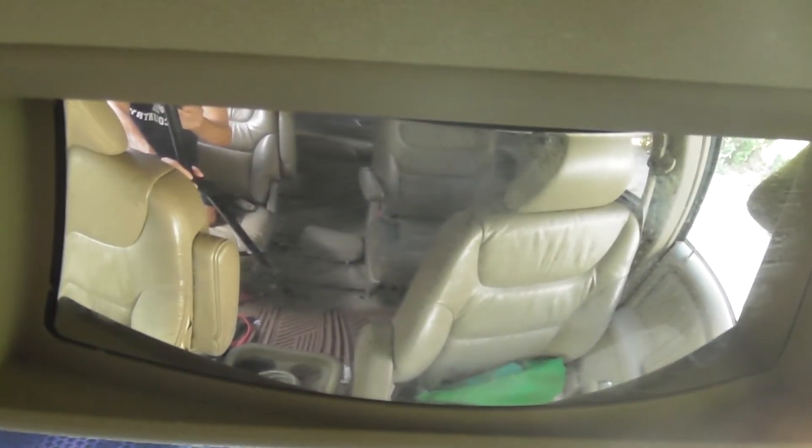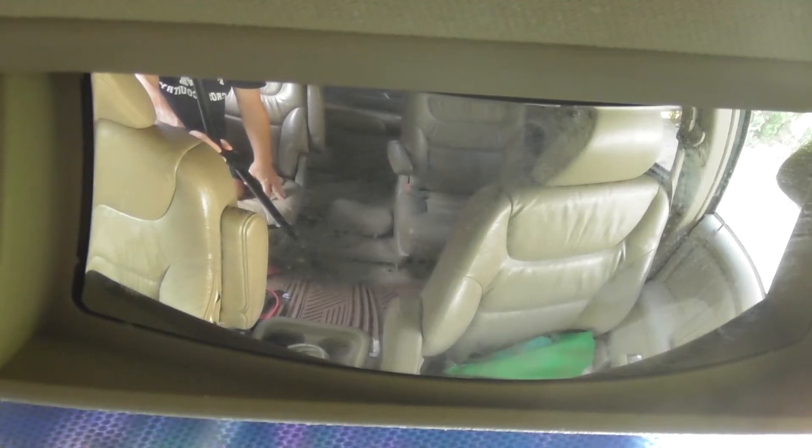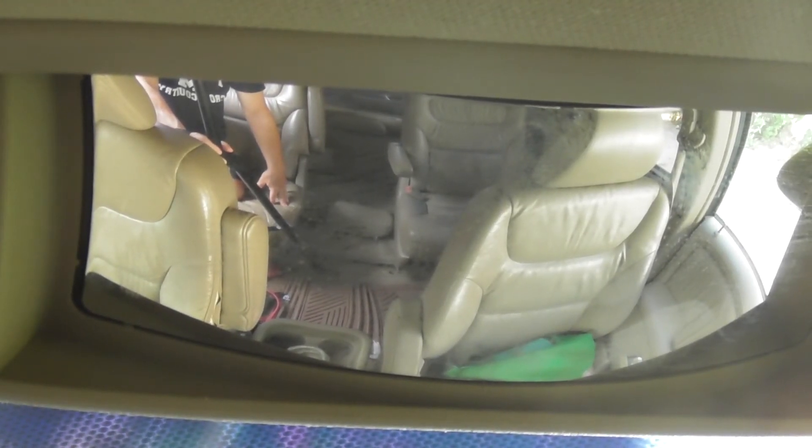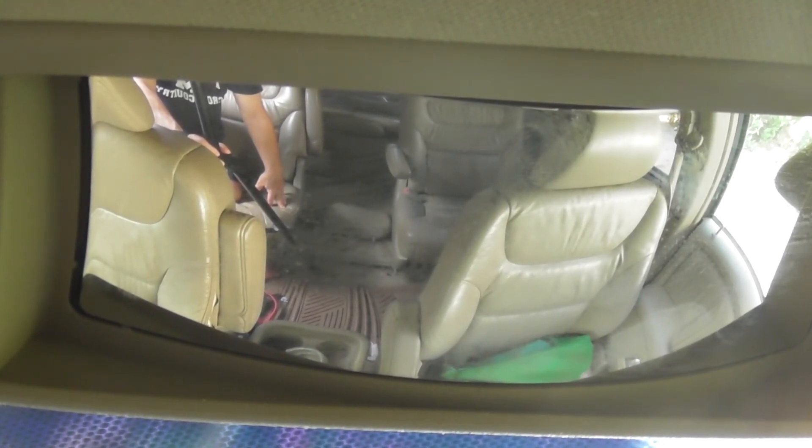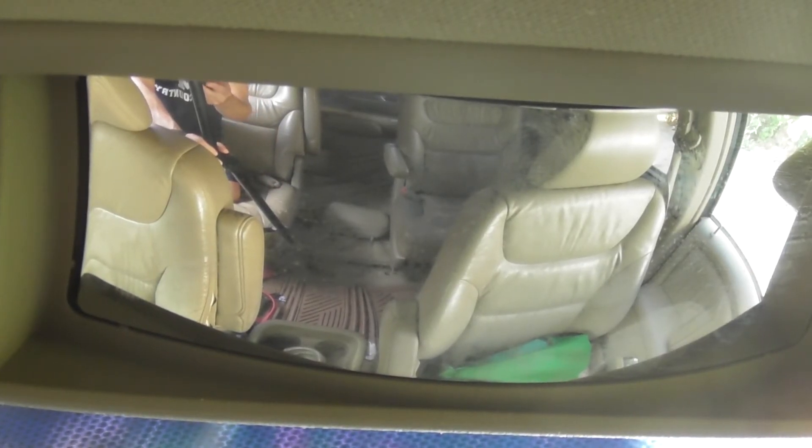And now let's go back to the convex and you will notice that you can see the headrest on the left plus the other seats - a panoramic view. Convex. Regular mirror. Kind of cool.